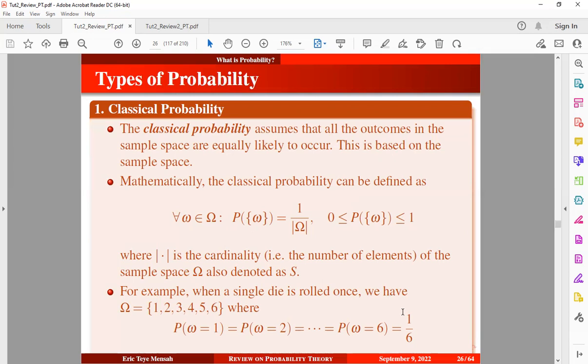The same applies when you throw a fair coin. You have two outcomes, head or tail. So the probability of observing any event, either head or tail, will be one out of two.